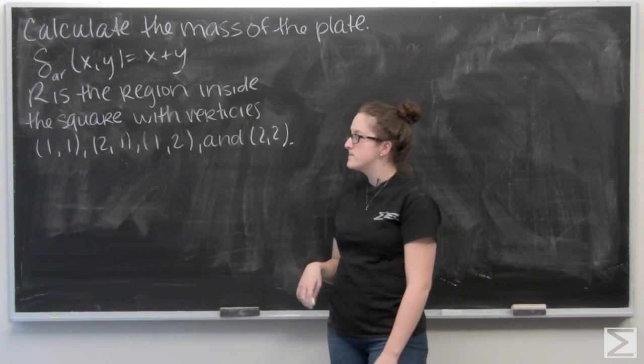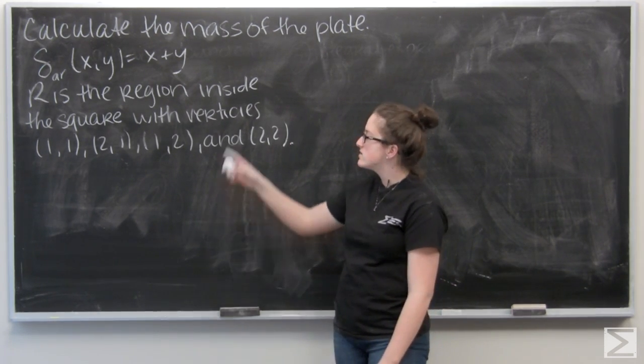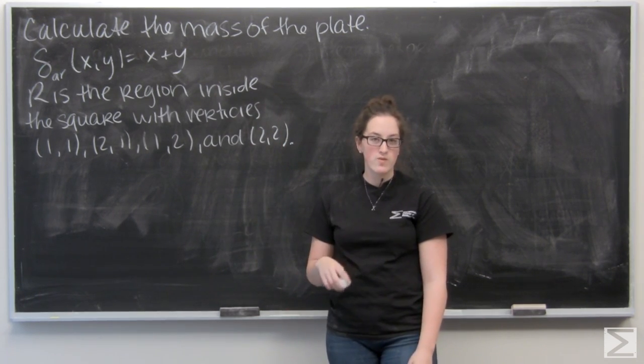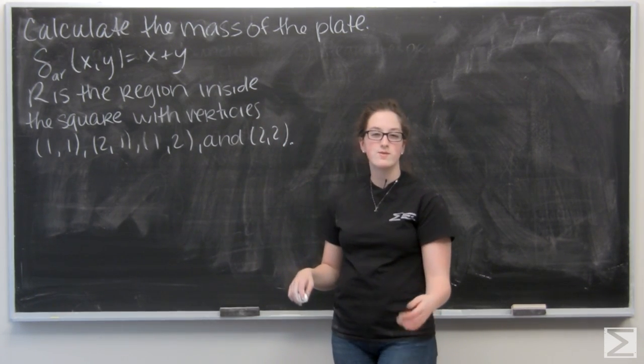So it's just x plus y, and then the plate is the region inside the square with vertices 1, 1, 2, 1, 1, 2, and 2, 2.